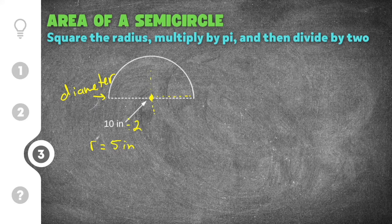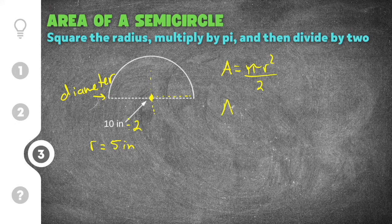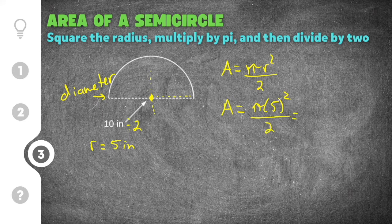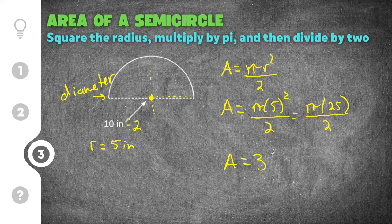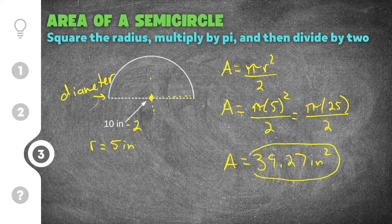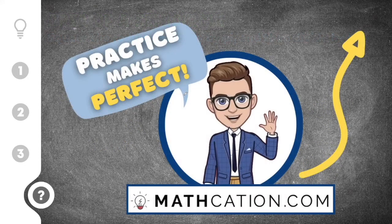With radius equal to five, we write: pi times five squared divided by two. Doing the exponent first, five squared is 25, so it's pi times 25 divided by two. Punching that into the calculator gives us 39.27. Our units are inches and they're inches squared because we're talking about area and we squared the radius.